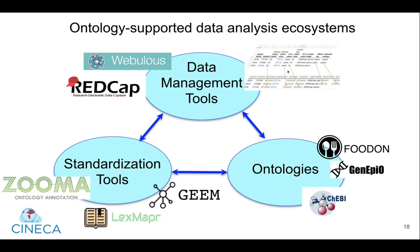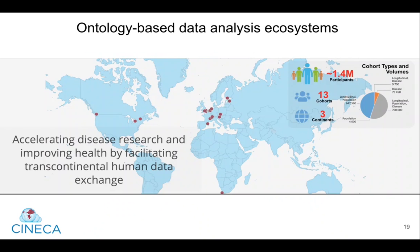So how do all of the tools that we've described work together to create an ontology-supported data ecosystem? Ontologies like FoodOn, the food ontology, Genepio, the genomic epidemiology ontology, and Kebi, the chemical entities of biological interest ontology, provide standardized terms and identifiers. Standardization tools like LexMapper, Zuma, and GEM enable users to apply ontologies and annotate their data. Data management tools like Webulus and RedCap, as well as spreadsheets and databases, enable users to store and manage their annotated data. And it's this ontology-supported ecosystem that the Cineca project will leverage to better enable metadata harmonization across cohorts to accelerate disease research and improve human health.